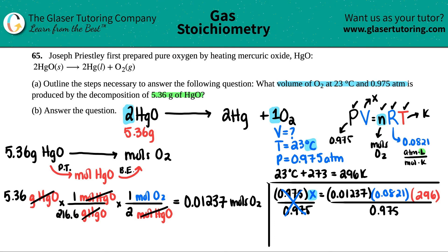Let's see: 0.01237 times 0.0821 times 296 divided by 0.975, and looks like three sig figs. So x equals 0.308, and remember, the volume coming out of the formula is liters. So 0.308 liters of O2, because we're specifically answering just for O2. And that's it! Awesome.